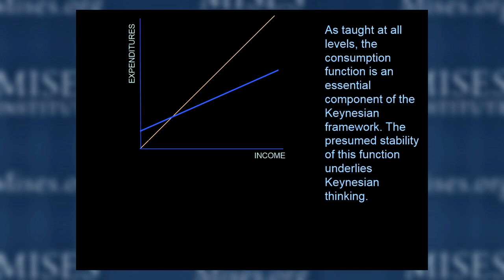The consumption function is an essential component of the Keynesian framework, and its presumed stability is the bedrock of Keynesian thinking. The consumption equation is C = A + BY, where A is the vertical intercept — meaning even with no income you do some spending — and B is the slope of the consumption function. The consumption function doesn't move around much.